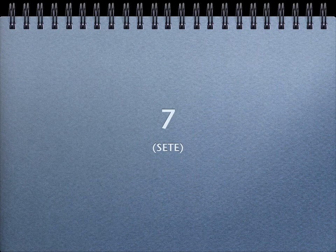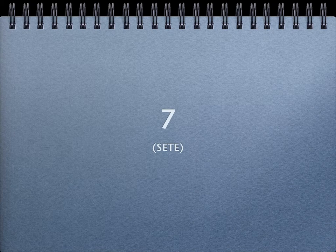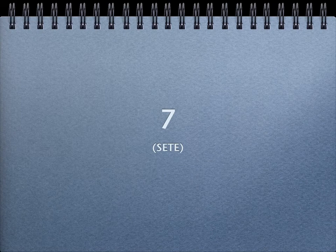Number 7 is 'sete.' You can see that the last E of the word is really, really soft — we almost stop at the consonant T sound. Pay attention: 'sete.' Do you want to repeat with me? 'Sete.' Very, very soft at the end.